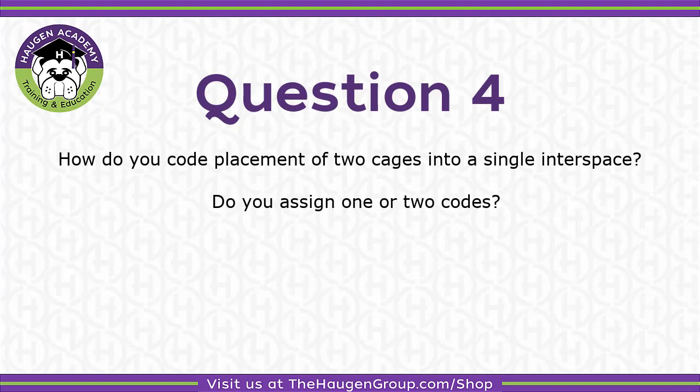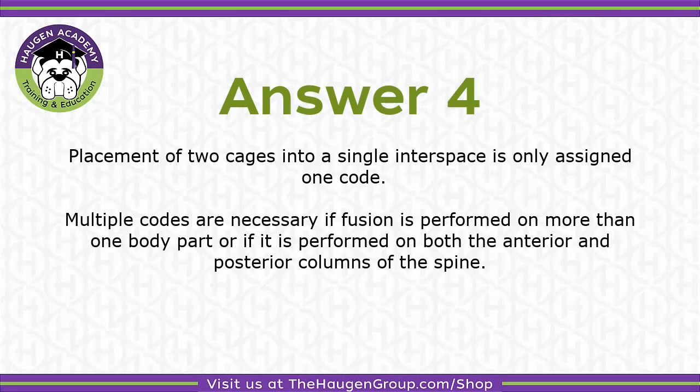How do you code placement of two cages into a single interspace? Do you assign one or two codes? Placement of two cages into a single interspace is only assigned one code. Multiple codes are necessary if fusion is performed on more than one body part or if it is performed on both the anterior and posterior columns of the spine.